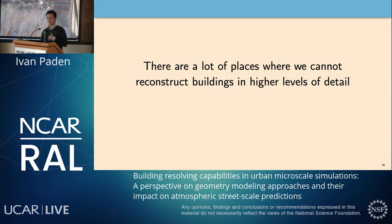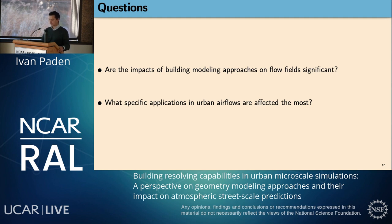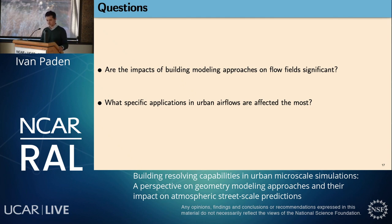There are many places where we cannot reconstruct buildings in higher level of detail. We'd like to know when it is necessary to go that way — not just because of data availability, but also because the algorithm requires more computational effort and human effort. So the question is: how do we benefit from better representations? Here are some research questions: are the impacts of building modeling approaches on flow fields significant? And what specific applications in urban flow simulations are affected the most?